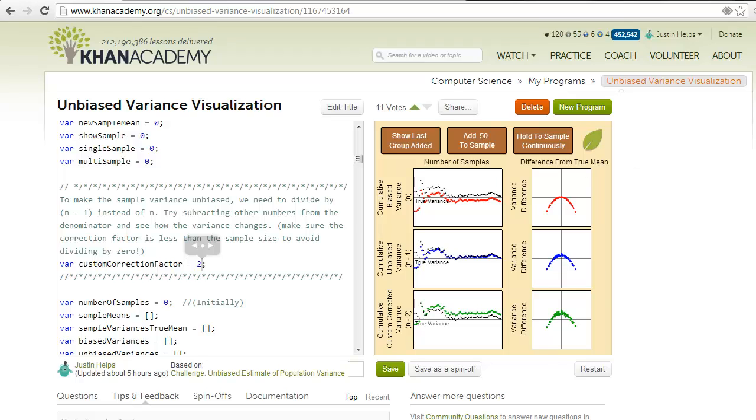But using n-1, on the other hand, results in a sample variance that is sometimes above and sometimes below the variance found using the true mean. And at larger sample sizes, it doesn't take long for the blue and black lines to join up, and together they approach the true variance of the population.